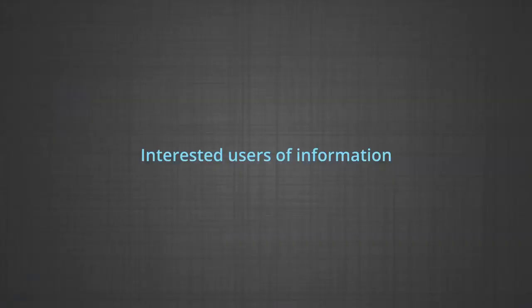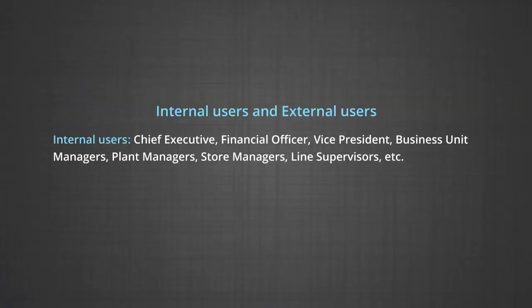The next important aspect related to accounting is interested users of information. Accounting is a means by which necessary financial information about a business enterprise is communicated and is also called the language of business. Many users need financial information in order to make important decisions. These users can be divided into two broad categories: internal users and external users. Internal users means those people who are the internal part of the business — that is, the managers at various levels who are managing the business — which includes chief executive, financial officer, vice president, business unit managers, plant managers, store managers, line supervisors, etc.